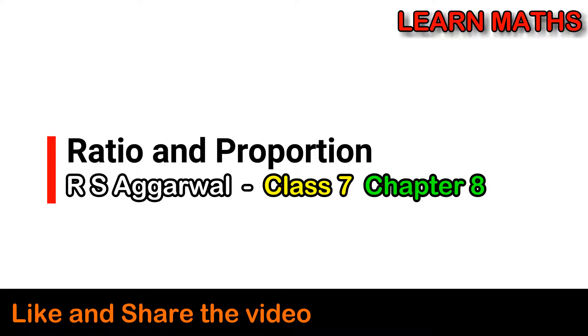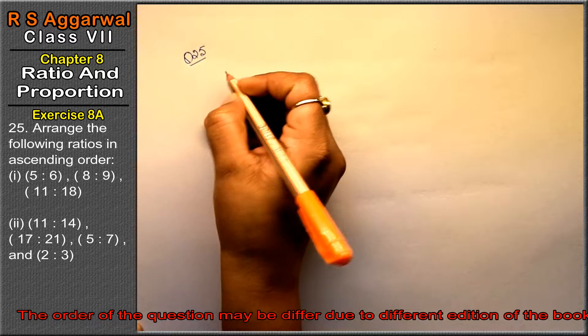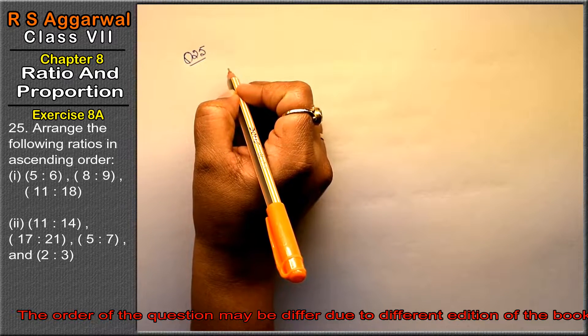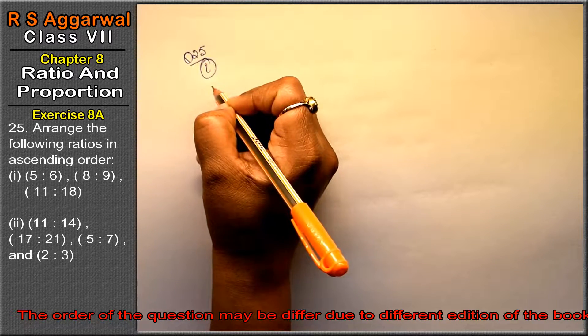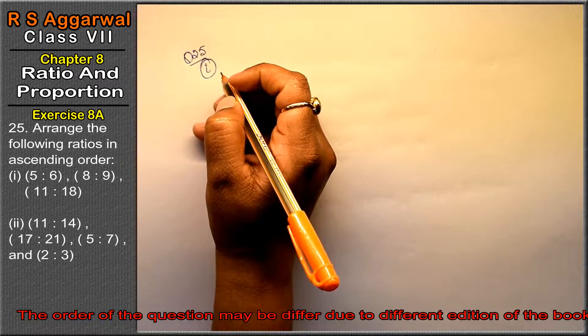Let's do question number 25 of exercise 8A, that is ratio and proportion. Question number 25 is arrange the following ratios in ascending order. Friends, ascending order means smallest first.